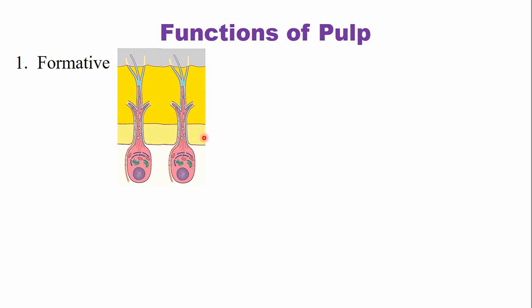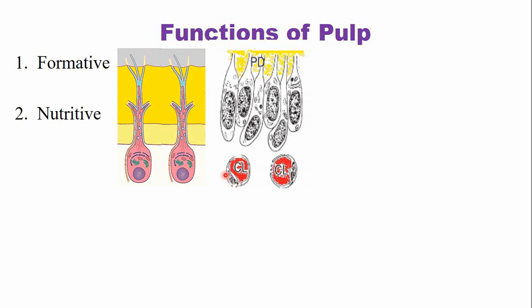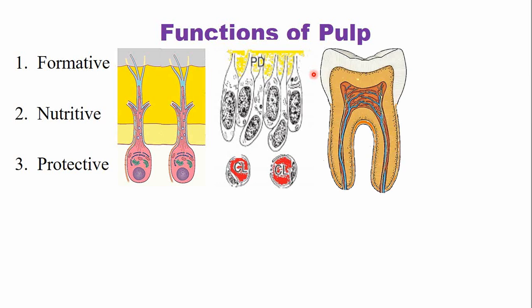You can see a thin layer of unmineralized matrix of dentine known as pre-dentine that is deposited by these odontoblasts and later mineralized to form matured dentine. Another important function is the nutritive function. As you know, dentine is basically an avascular tissue. So the pulp has a rich blood supply that provides nutrition to the odontoblasts, which are the main cells that help in the formation of dentine, and additionally it also provides nutrition to the dentine present above these odontoblasts. Another important function of the dental pulp is the protective function. The dental pulp has a rich nerve supply, and this nerve supply provides sensation of pain in case of dental caries or dental trauma.